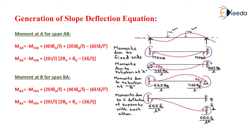First, we consider both supports as fixed. Due to the fixity of the supports, moments will be created at the ends — these are known as fixed end moments. Due to the loads w1 and w2, the beam deflects, and the fixed ends try to resist this rotation by creating resisting moments with values MF_AB and MF_BA.